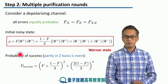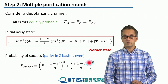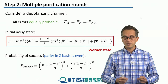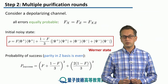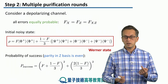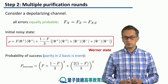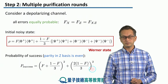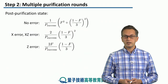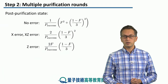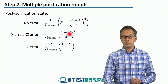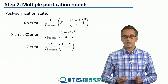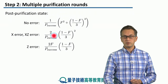If we go through the calculation of computing the probability of success — that our measurements in the z basis on the second Bell pair are going to give even parity, meaning that they will both agree on their measurement outcomes — then it's given by an expression in terms of the initial fidelity. The post-purification state can be written with the following probabilities. The probability of no error is given by one expression, and the probability of x error or x and z error is given by the same expression.